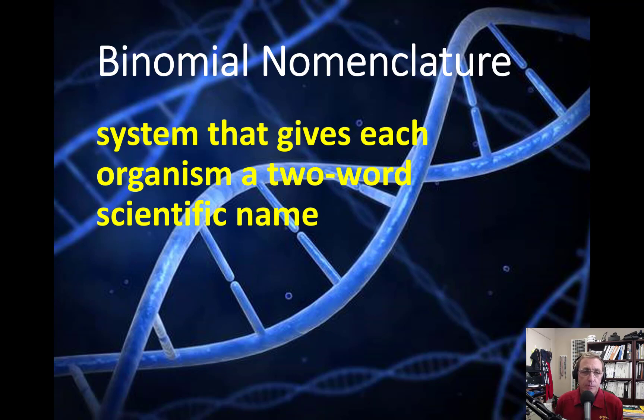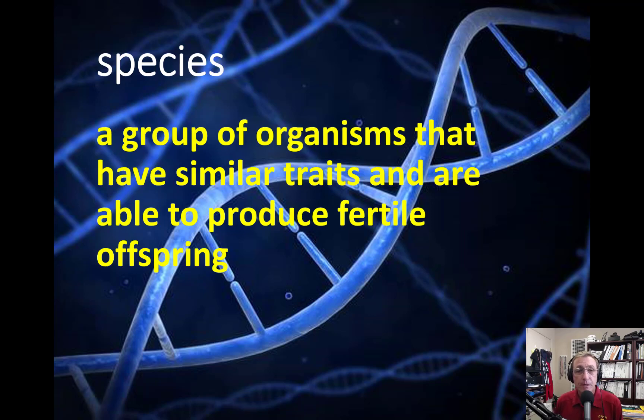Binomial nomenclature. I know those are two really big unfamiliar words for most of you. But the key that you want to look at to being able to identify what this word means is binomial. So bi, like bicycle, has two wheels. A binomial has two names. Okay, so this is a system that gives each organism a two-word scientific name. Bonus points if you know that that's the genus and the species for each living organism.